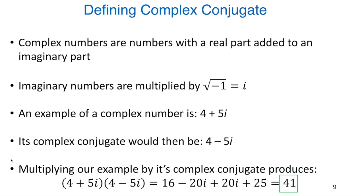They're complex conjugates of each other. If we multiply these complex conjugates together, notice what happens: since i is the square root of negative one, i times i is negative one. So the 20i terms cancel out and we're left with 41. We started with a complex number and it produced a real number — 41 doesn't have an imaginary part. This is a really important property that's going to come up again today.